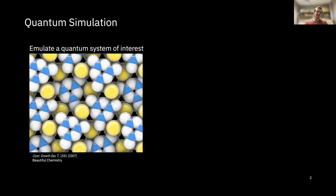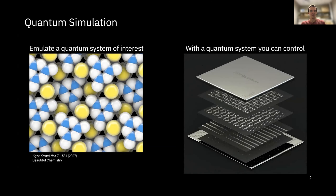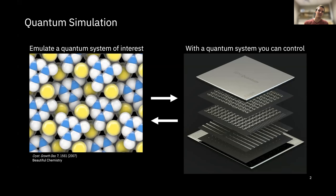With quantum simulation, we have some sort of quantum system of interest — here we have a beautifully rendered chemical compound — and we want to emulate that with a quantum system we have control over, such as a quantum computer. We need to know some properties of the material, encode that in the quantum computer, and then execute some sort of simulation on the dynamics or find some observable we're interested in. That would inform us on what's going on in the material, much like classical simulation but with a quantum speed-up.